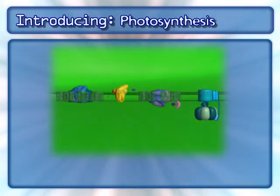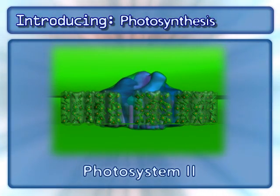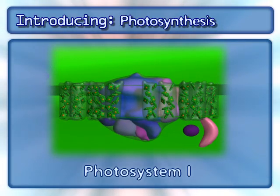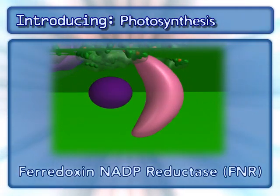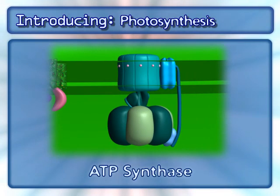The following complexes are found in the photosynthesis electron transport chain: Photosystem II, cytochrome B6F, photosystem I, ferredoxin NADP reductase, and the complex that makes ATP, ATP synthase.